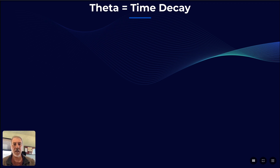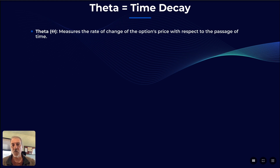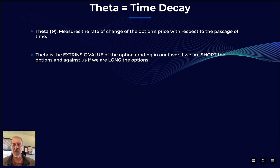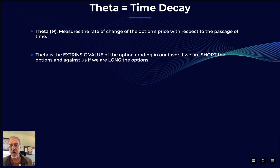Theta is essentially the equivalent of time decay, and measures the rate of change of an option's price with respect to the passage of time. Theta is the extrinsic value — if you're unsure what that is, go back a couple of sessions in the 101 series to learn more about intrinsic and extrinsic values. Theta is the extrinsic value of an option eroding in our favor if we're short those options, and against us if we are long the options.